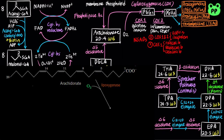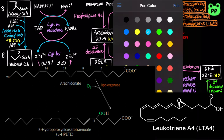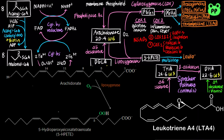On the other hand, the enzyme lipoxygenase catalyzes the linear pathway for incorporation of molecular oxygen into arachidonate, producing 5-hydroperoxyicosatetraenoic acid, abbreviated as 5-HPETE, which undergoes several more reactions to convert to leukotriene A4, abbreviated as LTA4. This linear pathway is not inhibited by NSAIDs.